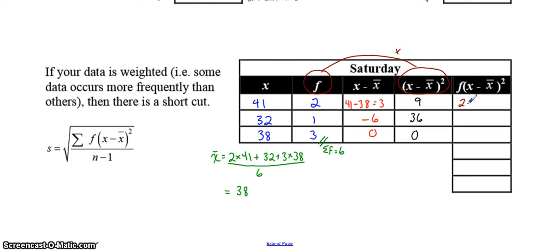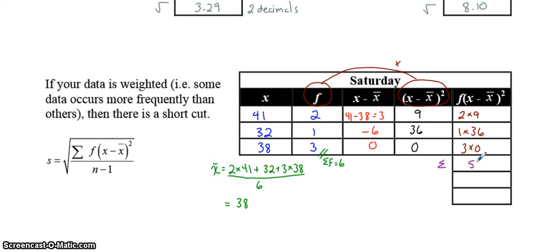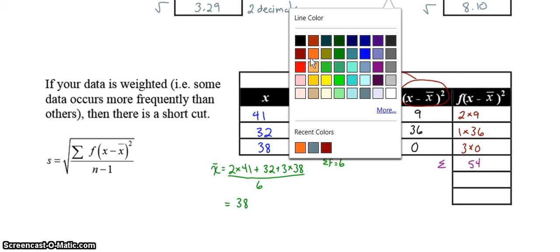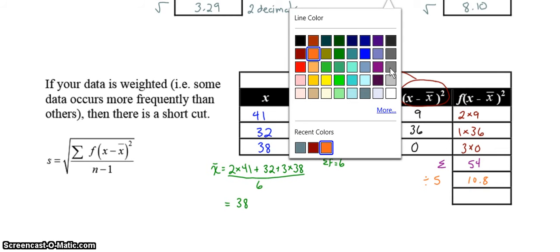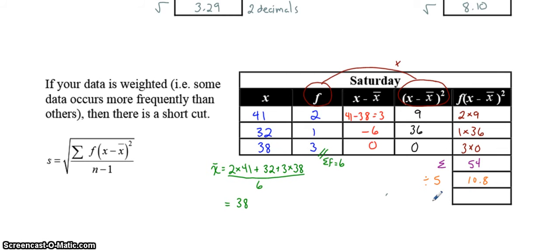So we had two 9s. We just have one 36. And we have three 0s. So you can do the 1 times 36, but since it's still 36, you don't have to do it with the 1. Now you're going to add all of them up, and you're still going to get 54. All of the rest of the work is the same. Divide by 5 to get 10.8, and then square root to get 3.29.